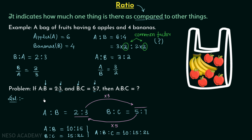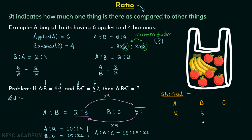So this is the actual process to find out A ratio B ratio C. Now we will move on to our shortcut method. Step 1 is to write down the ratios we have: A, B, and C in a single row. From ratio 1 we know A ratio B is equal to 2 ratio 3, so below A we write 2 and below B we write 3. From ratio 2 we have B ratio C equal to 5 ratio 7, so below B we write 5 and below C we write 7.